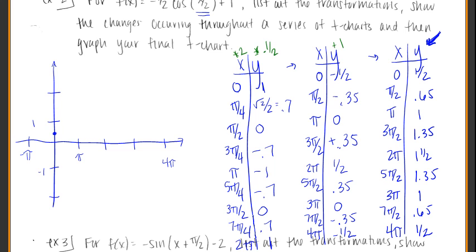Our first point is 0, 1 half. At pi over 2, we're at 0.65, we're just a little bit above that. At pi, we're up at 1. At 3 pi over 2, which is 1 and a half pi, we're at 1.35. At 2 pi, we're at 1 and a half. 5 pi over 2, we're at 1.35, so we're coming back down now. At 3 pi, we're at 1. And then 7 pi over 2, which is 3 and a half pi. At 4 pi, we're at 0.65. And at 4 pi, we're at 1 and a half.